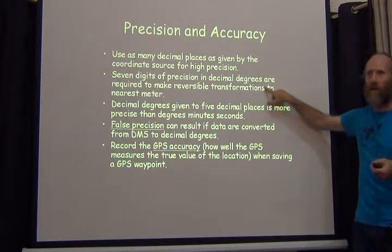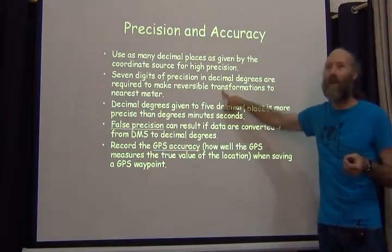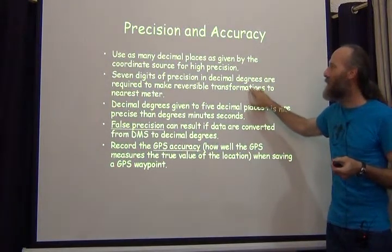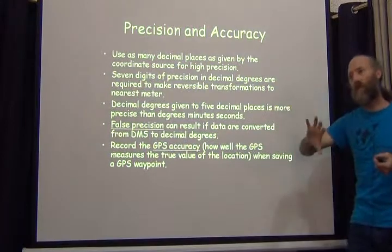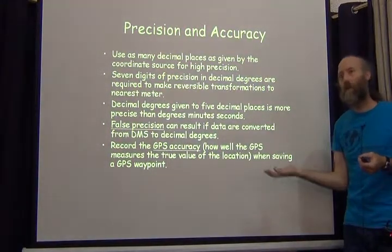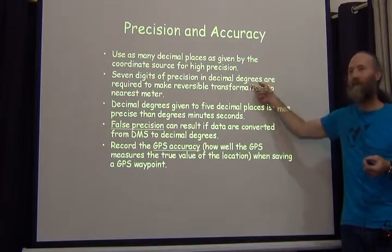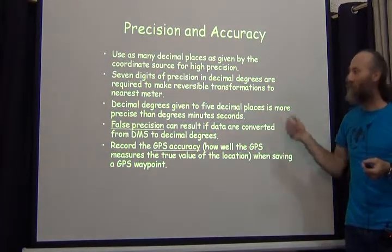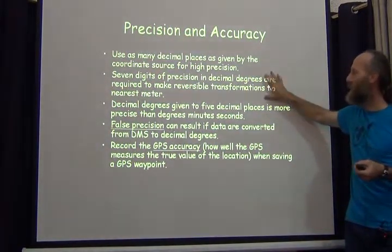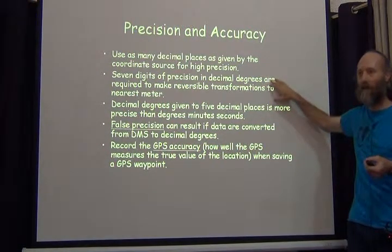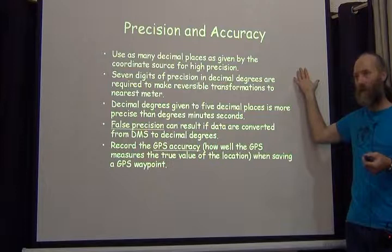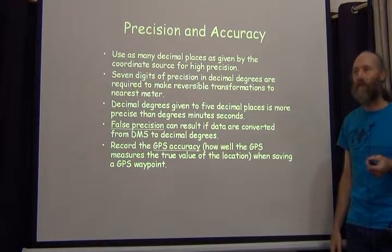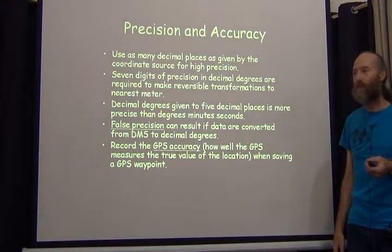You might ask why bother with seven digits of precision down to less than a centimeter — it's not for that reason. The reason is that if we keep all seven digits and then change our coordinate system, we can reverse the process and get back to where we started. If you keep fewer digits, the point will migrate away from where it started. For example, if you have decimal degrees and convert to degrees-minutes-seconds, then convert back, without seven digits it will end up in a different place. That's why we have coordinate uncertainty in meters — that tells us how big the circle is; precision does not.